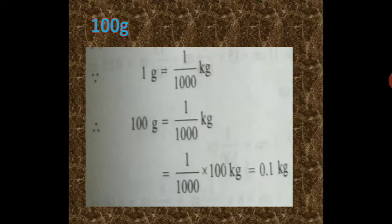What about 100 gram? As we know that 1 gram is equal to 1 by 1000 kilogram. Therefore, 100 gram is equal to 1 by 1000 kilogram into 100 gram, which is equal to 0.001 kilogram.